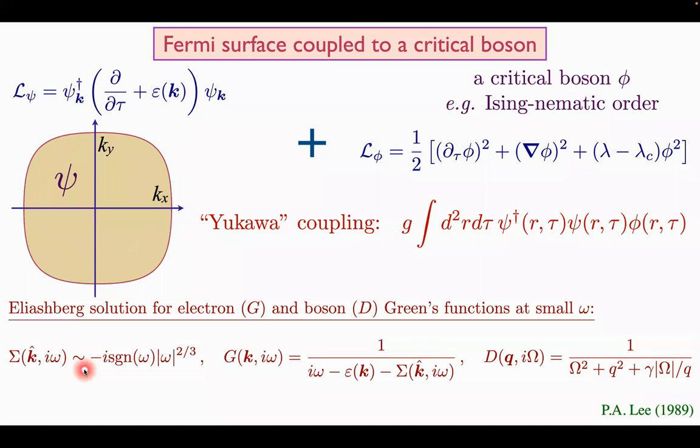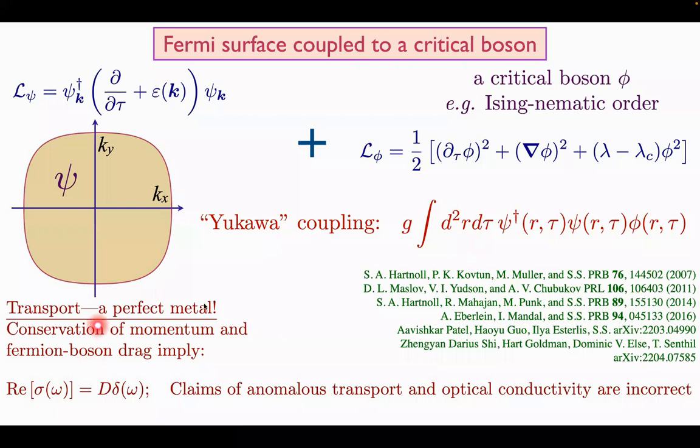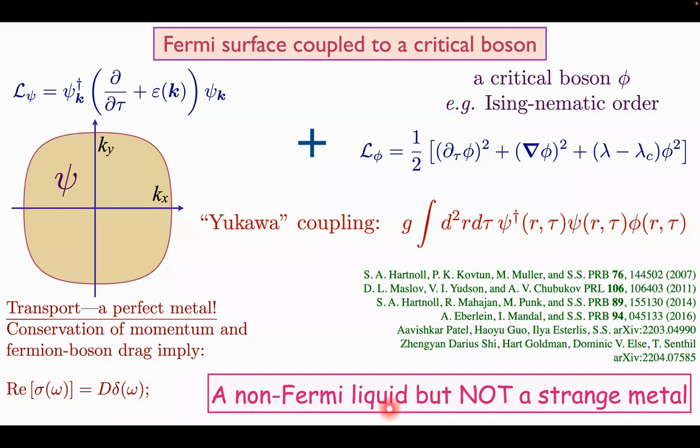Okay, so that's exciting. Maybe this could explain some of the experiments. But as has become clear over the years, when you start looking at transport, this particular theory is not strange at all. In fact, it's a perfect metal because of conservation of momentum and strong fermion-boson drag, which was overlooked in many of the earlier papers. And the conductivity is actually just pure Drude-like in this continuum theory. You have to put umklapp or disorder to get anything different from a pure delta function.